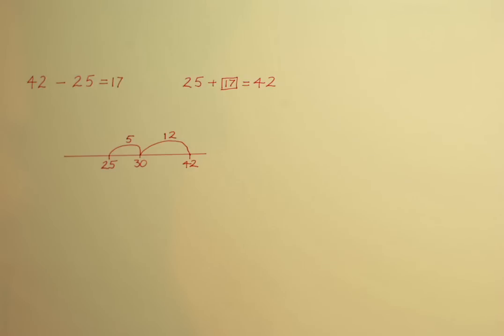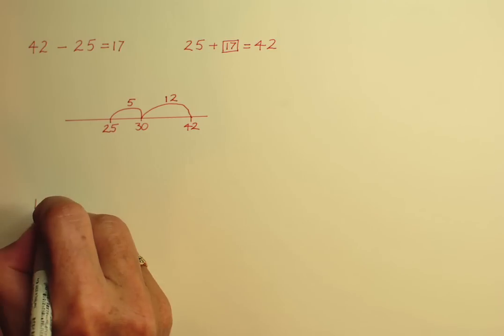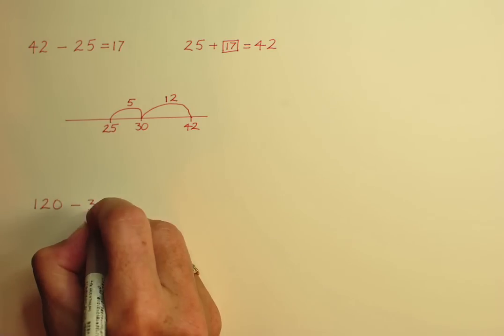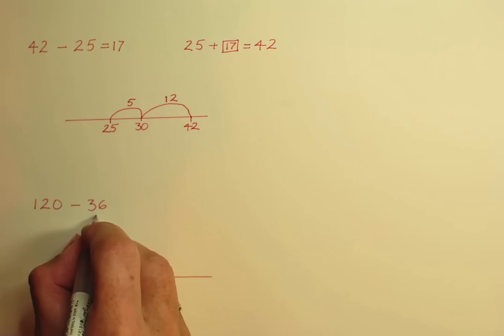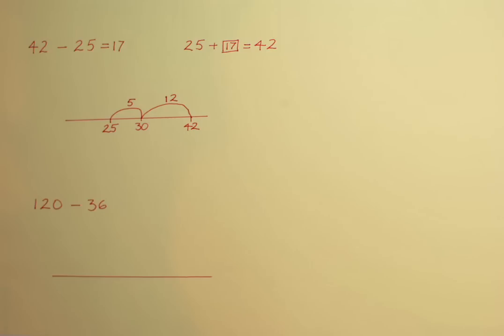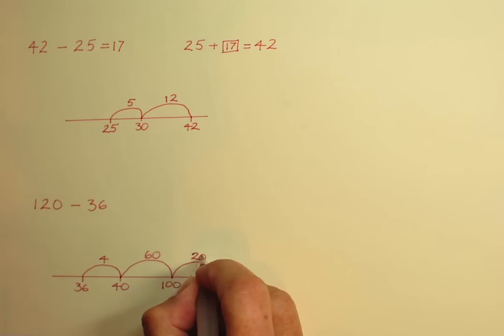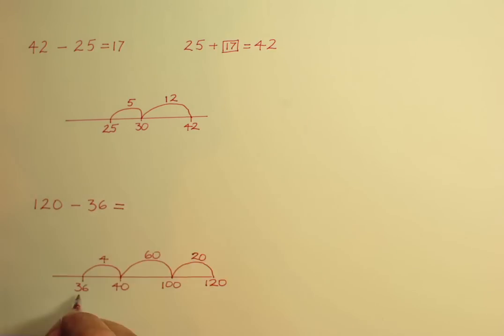When might we need more than two steps of calculation? Well, when we need to bridge through 100 as well as through a 10. For example, 120 minus 36. Draw an empty number line, mark the two numbers and find the gap between the two numbers by bridging. 36 and 4 is 40. From 40 to 100 is 60. From 100 we need a third jump to get 120. The difference between the numbers is 84.